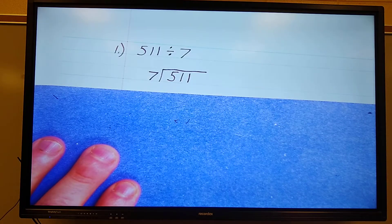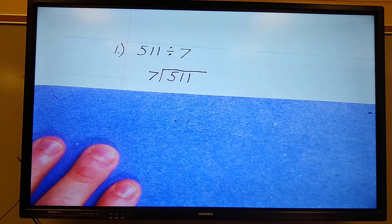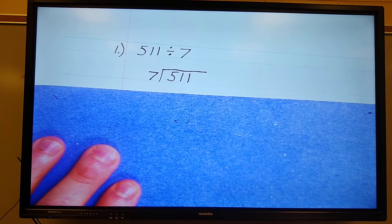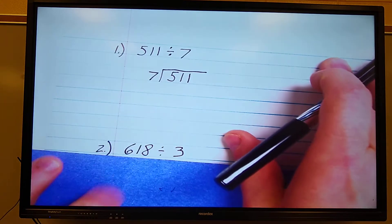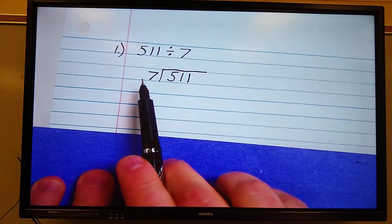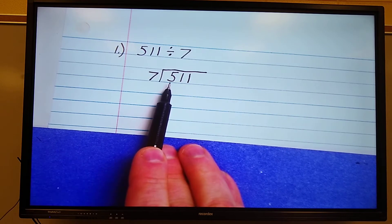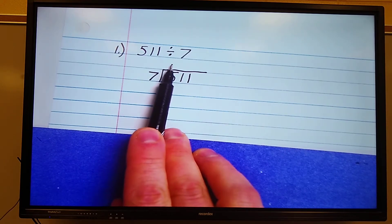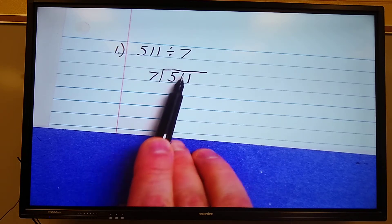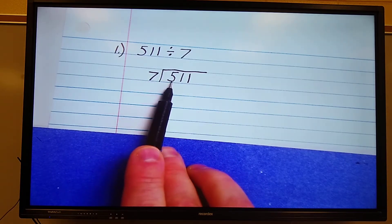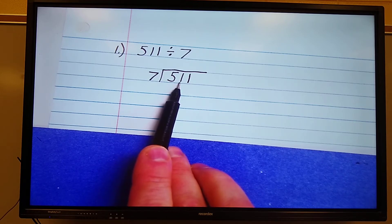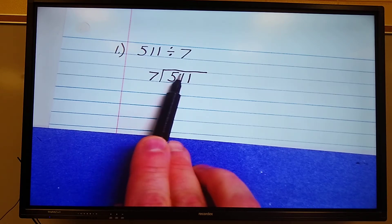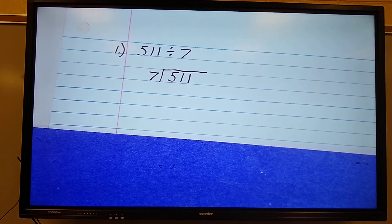So my steps are to divide, multiply, subtract, bring down, repeat if necessary. The first thing I need to ask myself is can 7 go into 5? And the answer is no. Now you can put a zero on top of here if you want to, or you can just skip to the next place. Can 7 divide into 51? And the answer is yes, of course it can. Now this is where you need to know your multiplication facts. What times 7 is close to 51 without going over? And the answer is 6.